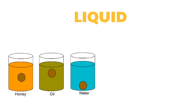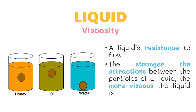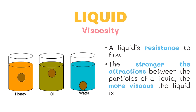Another important property of liquids is viscosity. Viscosity is a liquid's resistance to flow. Usually, the stronger the attractions between the particles of a liquid, the more viscous the liquid is. For example, if we drop a pebble in different containers with honey, oil, and water, the pebble will sink to the bottom fastest in water, followed by honey, and last in oil. This is because oil is the most viscous liquid among the three, while water is the least viscous.